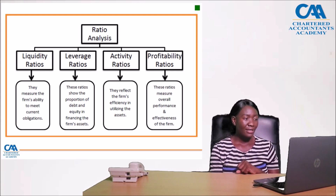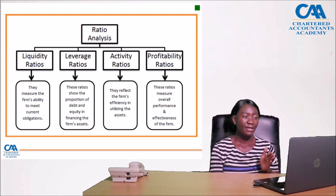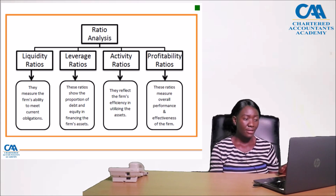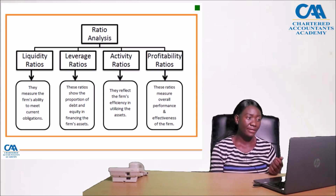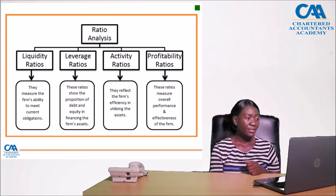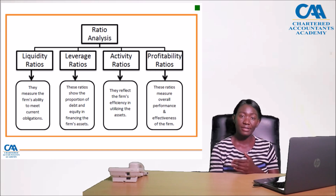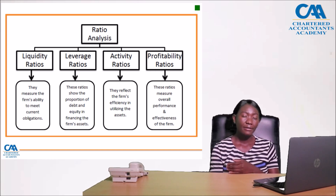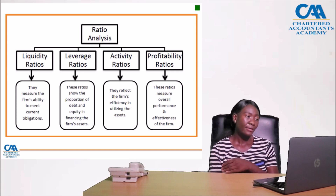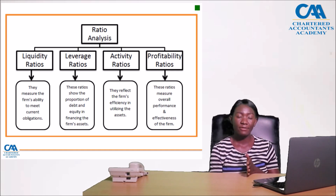The classes of ratios include liquidity ratios, leverage, activity, and profitability ratios — mainly four classifications. Liquidity ratios measure the firm's ability to meet current obligations, such as trade payables. Under these, I have my acid test ratio and my current ratio.